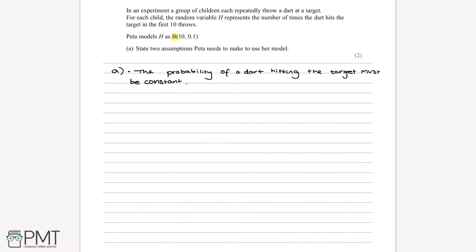A second assumption we have to make is that trials must be independent. In the context of this question, we define a trial as each throw, since the number of trials n is 10 and we know there are 10 throws. So each throw is a trial, and we have to assume these are all independent - meaning hitting the target on your first throw doesn't affect your chances on any other throw.